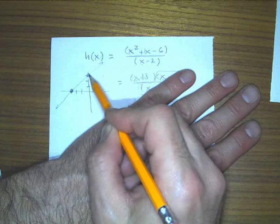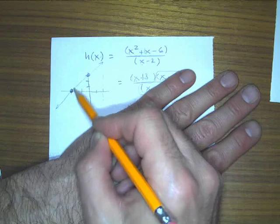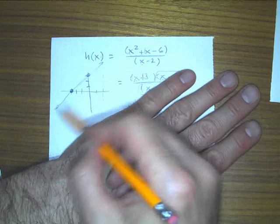The slope is one. So it goes over one, up one, over one, up one, and so forth. So you end up with a straight line.